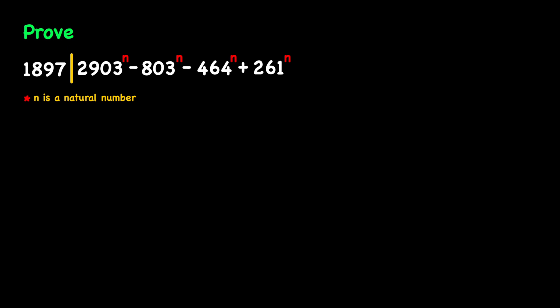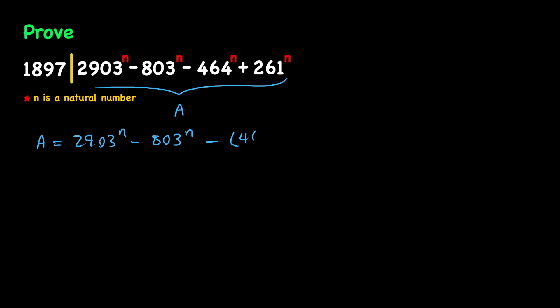So first of all, let's say that this is a, so basically we want to prove that 1897 divides a. In order to do that, let's start with the fact that a equals 2903 to the nth power minus 803 to the nth power minus the quantity 464 to the nth power minus 261 to the nth power.